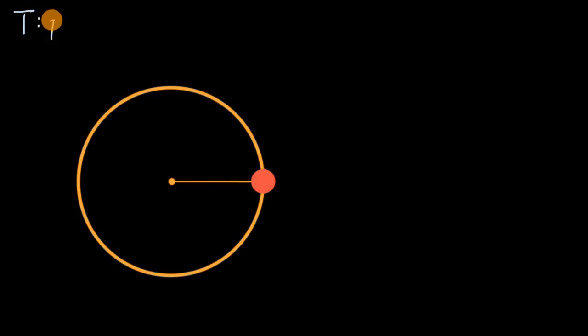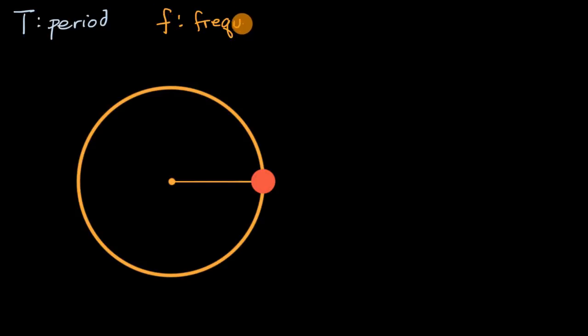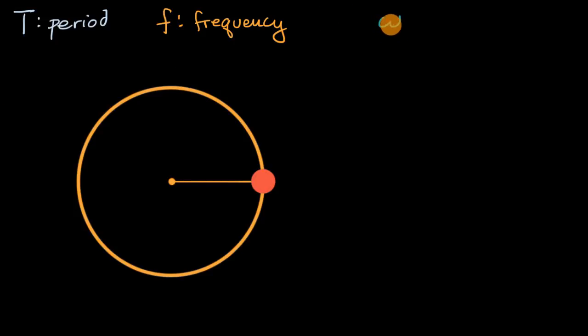What we're going to do in this video is continue talking about uniform circular motion, and in that context we're going to talk about the idea of period, which we denote with a capital T, and a very related idea, that's of frequency, which we typically denote with a lower case f. We'll connect these to the idea of angular velocity — in particular, the magnitude of angular velocity, which we can denote with a lower case omega.